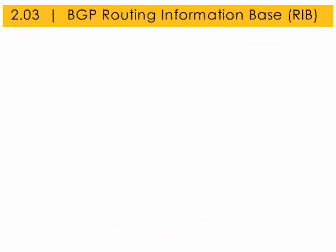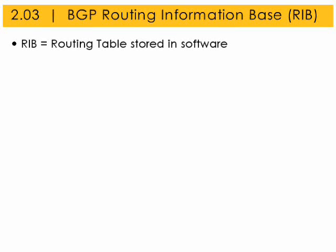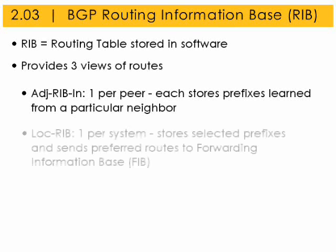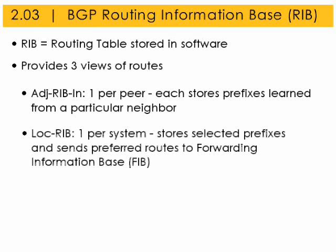The BGP Routing Information Base, or RIB, is the software version of the routing map. It provides three views of routes. The adjacent RIB-In, of which there is one per peer, stores prefixes learned from a particular neighbor. The local RIB, of which there is one per router, stores the selected prefixes and sends the preferred routes to the forwarding information base.